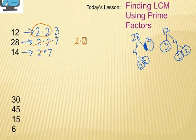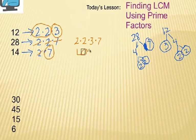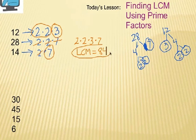Then I have a 3. I circle the 3, and that's the only one there, so that becomes part of my list — a single 3. Then I notice there's a single 7 for the 28 row and a single 7 for the 14 row. I circle one of them and cross the other out because we've already taken care of it. So my answer is 2 times 2 times 3 times 7. To get the least common multiple, you multiply it all back together. The least common multiple is the lowest number that contains all the factors of 12, 28, and 14, and that is 84.